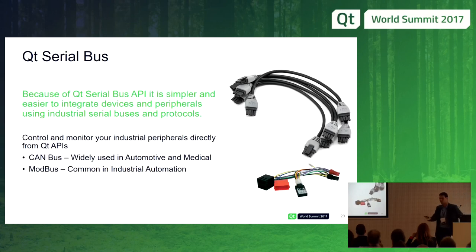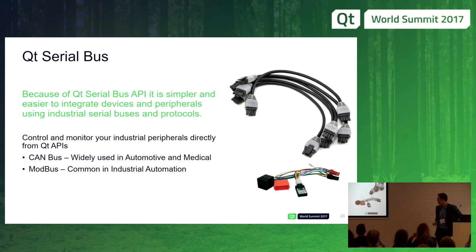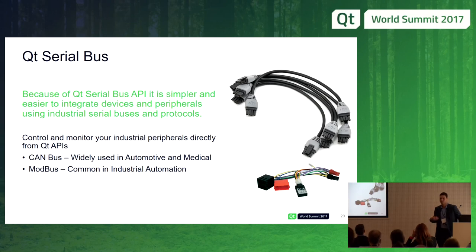We also have CAN bus and Modbus, which are industrial peripheral APIs. They are used in automotive, so we're putting a lot of effort into them. If something changes, we will maintain them. We take care of the maintenance for you — you have the API, it will be stable, and we'll maintain it.